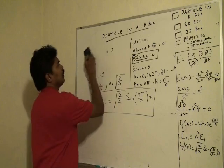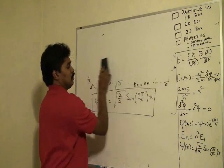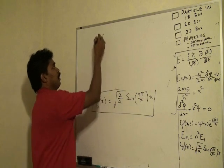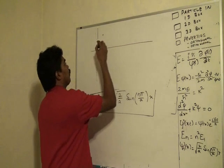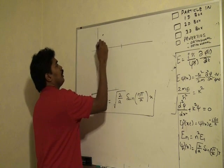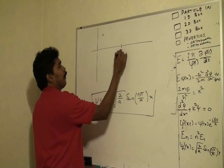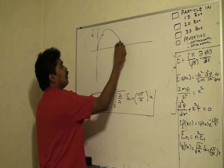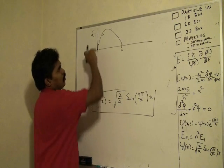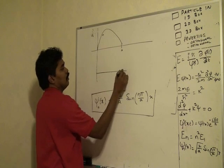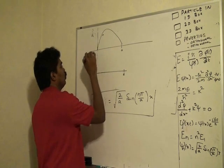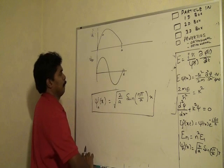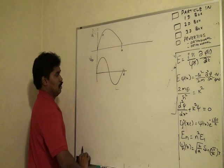Let us see how this ψ function looks for various values of n. For n=1, the wave function goes from 0 to a with one half-sine wave. For n=2, it corresponds to 2π — two half-sine oscillations across the box.